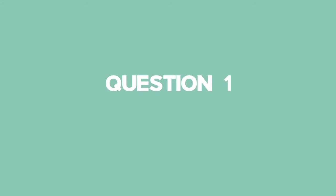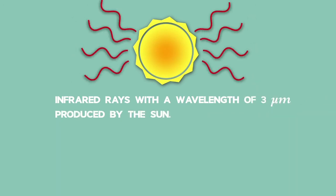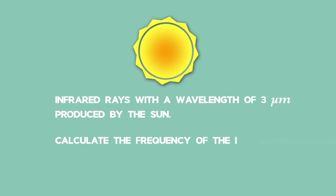Question 1: Let's look at an equation using a calculation of EM radiation. Infrared rays with a wavelength of 3 micrometers are produced by the sun. Calculate the frequency of the infrared rays.